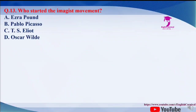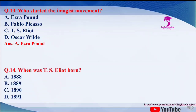Question number 13: who started the imagist movement? The options are A. Ezra Pound, B. Pablo Picasso, C. T.S. Eliot, and D. Oscar Wilde. The correct answer of this question is A, that is Ezra Pound.